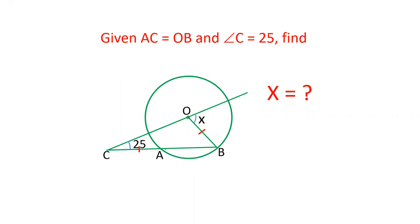Friends, in this question there are two secants, one is CAB, another is CD which passes through the center. Let's say this point is D. We have to calculate the angle measure of angle BOD. Angle C is given as 25. It is given that AC equals OB, and we have to calculate the value of x.